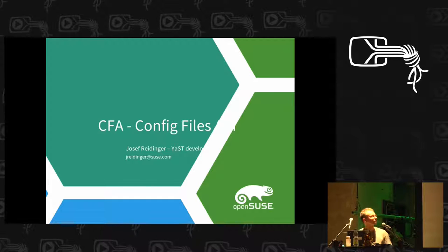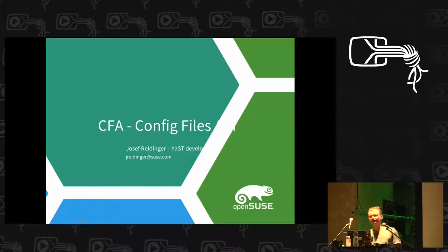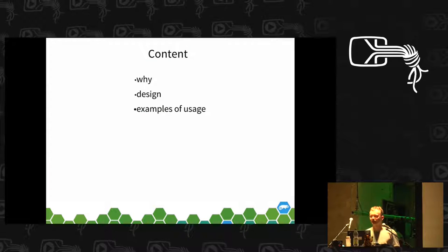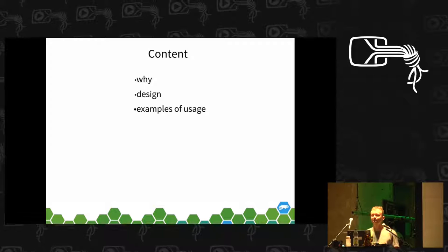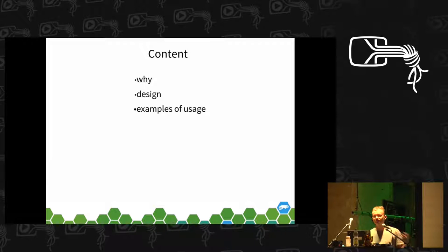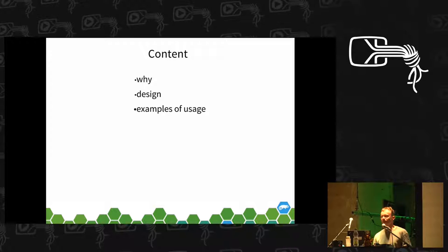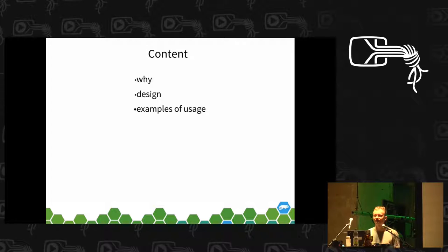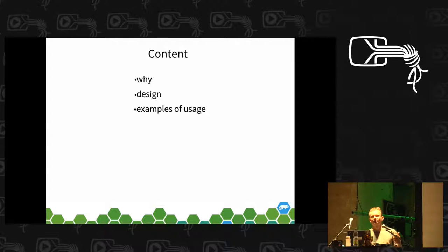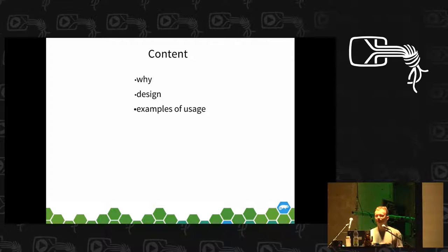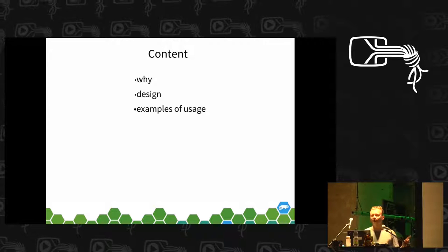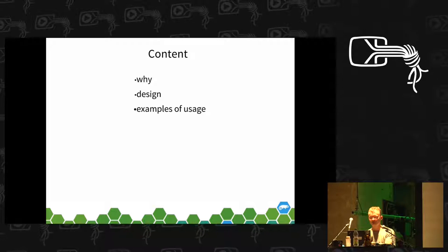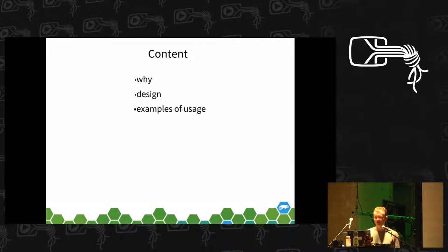So what's the content? I will explain why we created a new API and why the old one is not enough. Then I'll explain the design of this API and how it works together. And then, of course, I'll show some real-life examples of usage, because on Tumbleweed it's already used. I will show some code that is used in Tumbleweed.